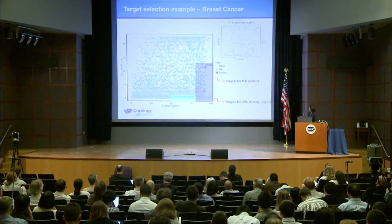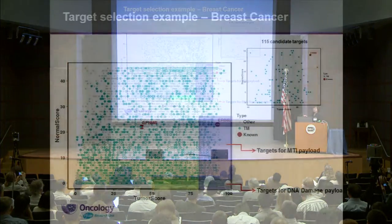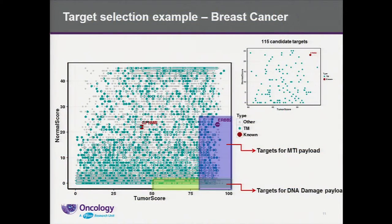Here is an example in breast cancer showing how we use these two scoring systems to identify potential targets. The left panel shows the distribution of normal score versus tumor score for all human genes. Upon applying the transmembrane prediction filter, we limit candidates to those highlighted. By further applying tumor score and normal score selection criteria, we predict different target types for different payload classes. For example, the purple region has a very high tumor score cutoff but a medium normal score cutoff — targets for the MTI payload — and we successfully predict HER2, a known ADC target for microtubule-based mechanism payload.